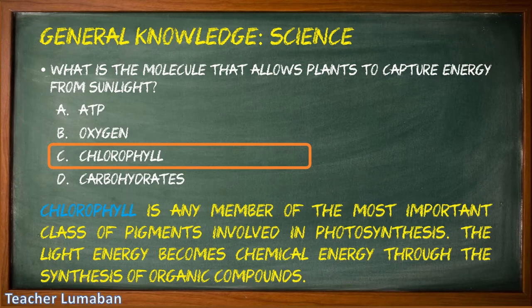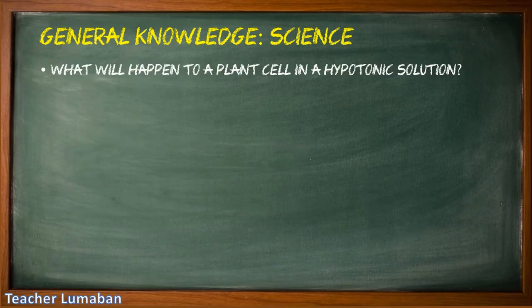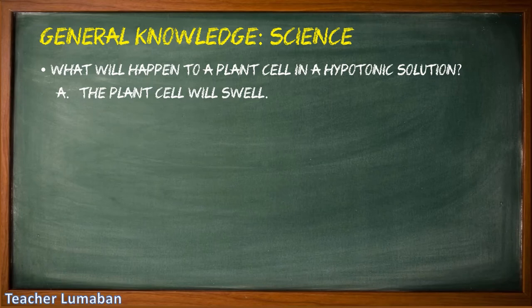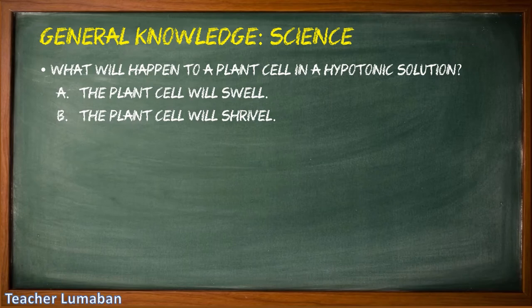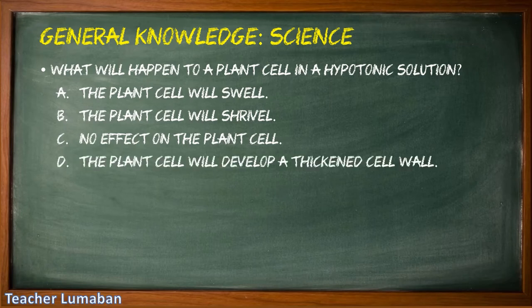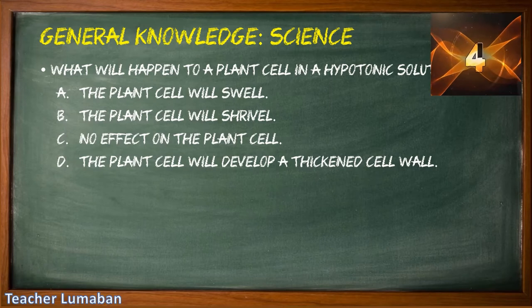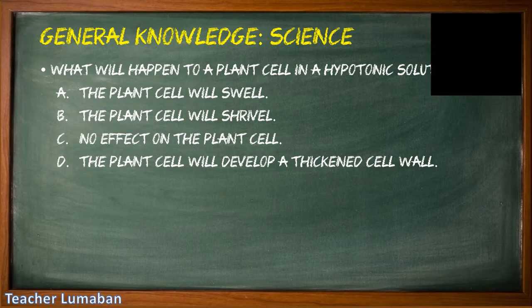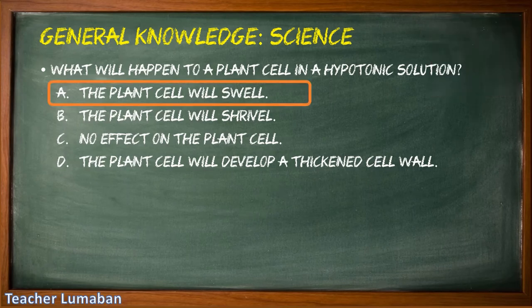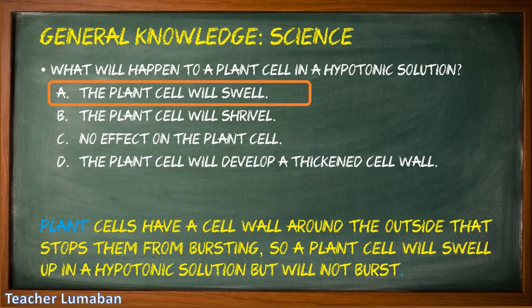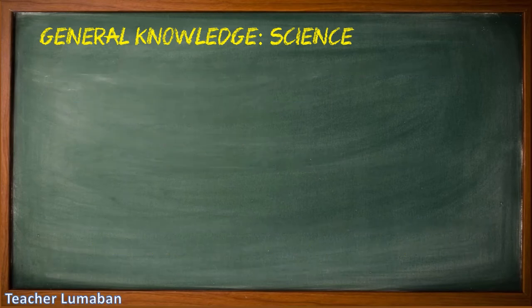What will happen to a plant cell in a hypotonic solution? Letter A: the plant cell will swell, Letter B: the plant cell will shrivel, Letter C: no effect on the plant cell, Letter D: the plant cell will develop a thickened cell wall. The correct answer is Letter A: the plant cell will swell. Plant cells have a cell wall around the outside that stops them from bursting, so a plant cell will swell up in a hypotonic solution but will not burst.